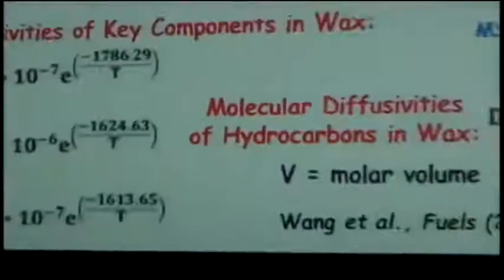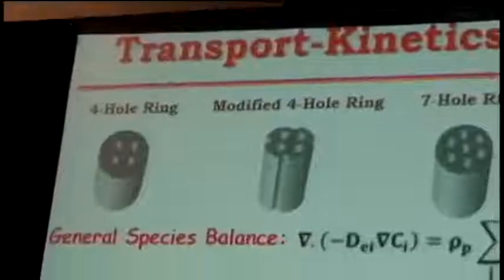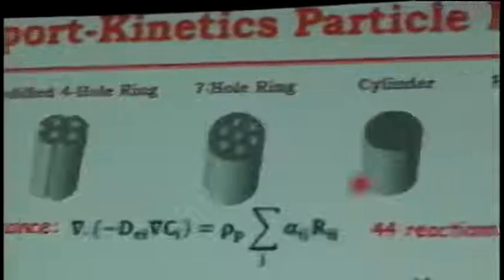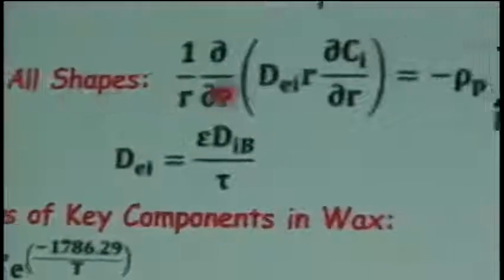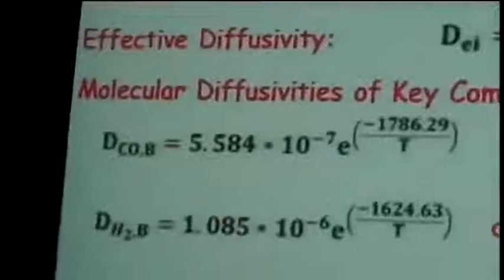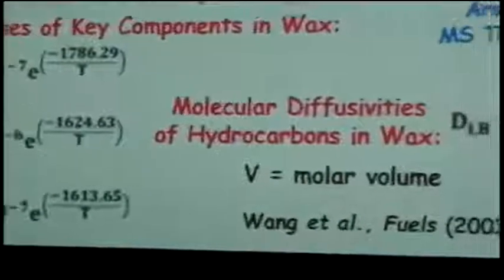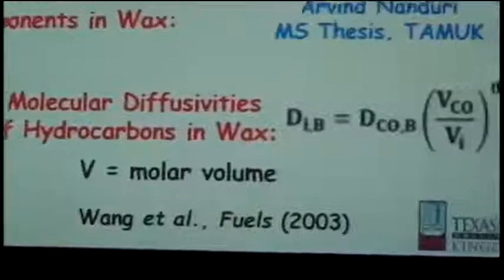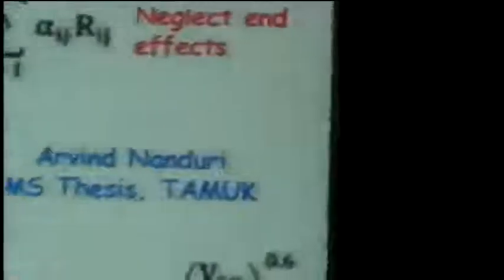Now, if we know about a reaction kinetic model, our goal moving forward is to incorporate that into some type of particle model to describe the transport effects which can occur on a particle scale. This shows some recent work we did looking at different particle shapes for Fischer-Tropsch synthesis, in which we looked at diffusion and reaction in these different shapes. We actually did this in 1D, but we also later extended it to 3D, accounting for the full spatial dependence.